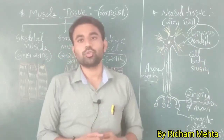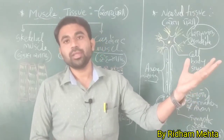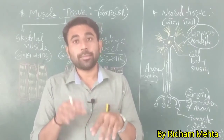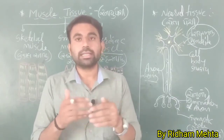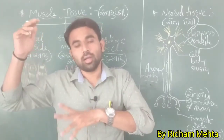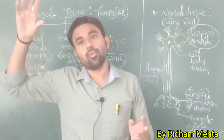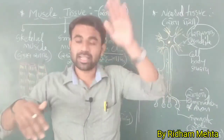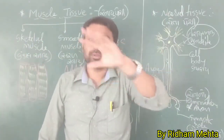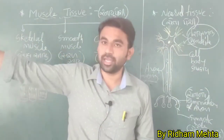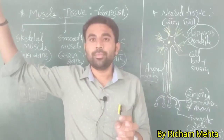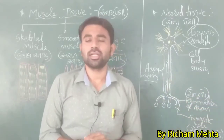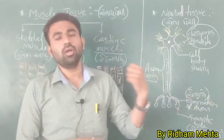Nerve tissue receives messages from sensory organs and generates nerve impulses. The nerve impulse travels electrically through ion exchange and potential differences from sensory organs to the brain via the neuron cell membrane. The brain then sends a response back to the appropriate organ to act accordingly.